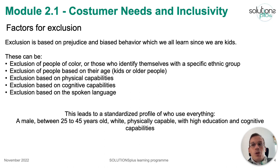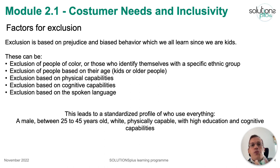Since we are kids, we learned and people taught us how to exclude others based on visual aspects, or things related to religion or related to societies. We learn all these things since we are kids and based on that we create our own ideas about what is a standardised person or what is the correct view of what a person is. These are not actually so correct, so we have to understand that we are actually biased when we are thinking about this.